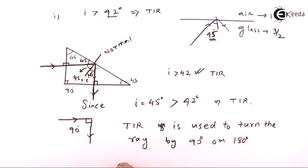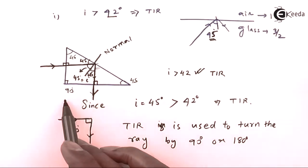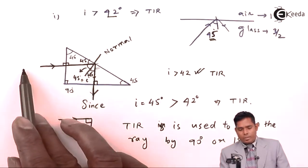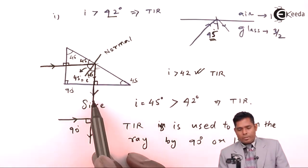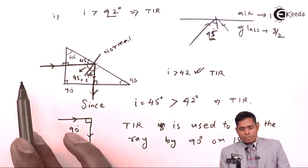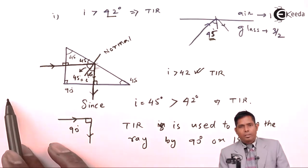We will now take an example where the ray can be turned by 180 degrees. The ray has to be turned 90 degrees in one direction, and then again 90 degrees back, so that the incident ray and the final reflected ray are antiparallel — a reversal of 180 degrees.